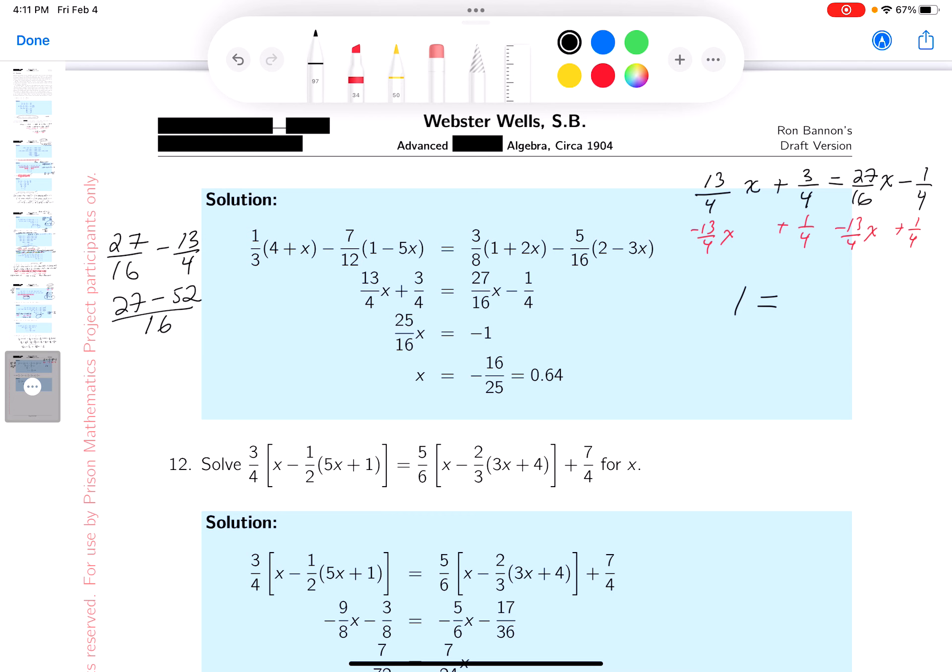And let's see, twenty seven minus fifty two is minus twenty five sixteenths. I'm going to write that down. Minus twenty five sixteenths of an x. Now I want to point out they have something over here as an equivalent to that statement and I just want to briefly go through that.